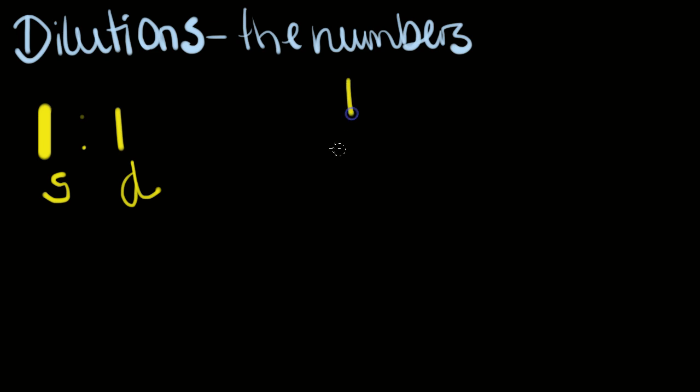The other way to write it down would be, for example, a 1 to 2. And in this manner, it is one part sample to two parts total. These are actually the same dilutions. So I can see that can be confusing sometimes to folks.